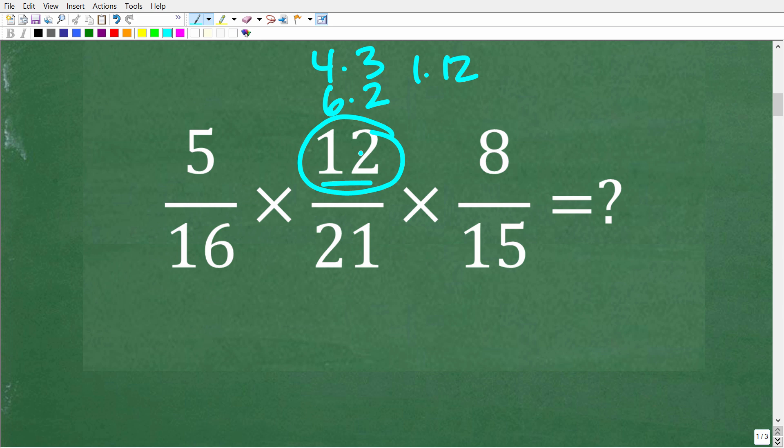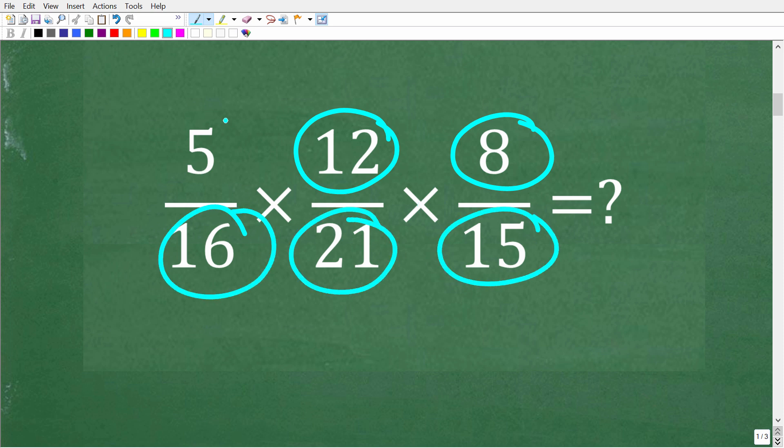So 1 and 12 are also factors of 12. What we want to do here is look at all these numerators and denominators in terms of their factors and we want to find like factors between all the numerators and denominators.